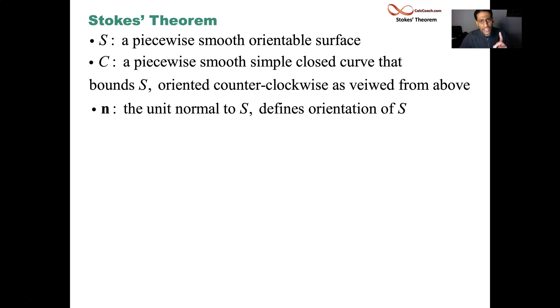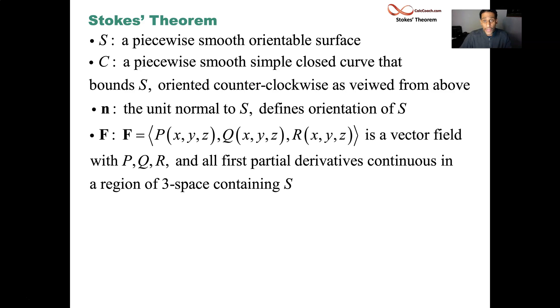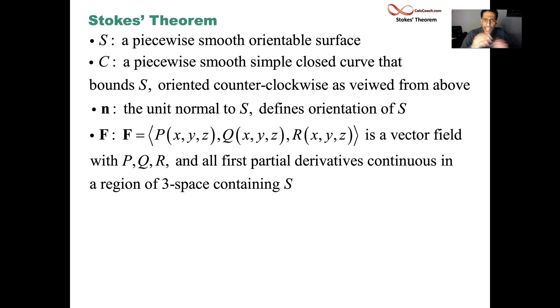All of this included in the fact that we have a vector field F = (P(x,y,z), Q(x,y,z), R(x,y,z)). That vector field has three components to it. And we need those three components to be differentiable. Their partial derivatives need to exist and be continuous. And if that's all true, then here is what we can say.